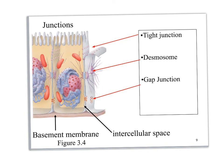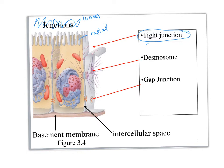Here we have a single epithelial cell next to another, same shape and size. We have the basement membrane at the bottom, and the apical surface away from it. The whole area is the lumen of the tube. To keep cells close together, we have tight junctions — I think of these as snaps that snap two cells together. Then we have desmosomes — I think of those as shoelaces, with long strands tying the cells together. Then there are gap junctions, which are tunnels.